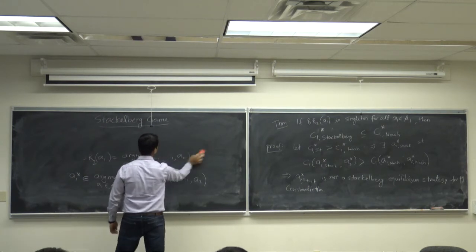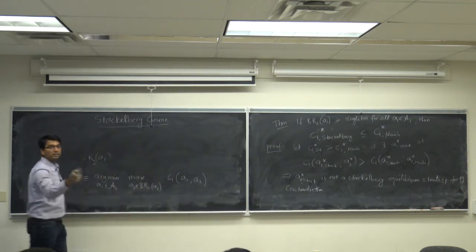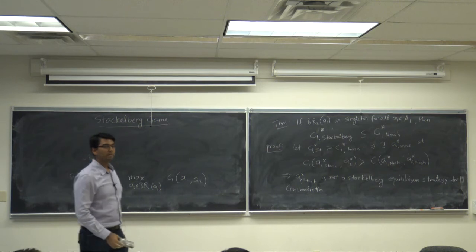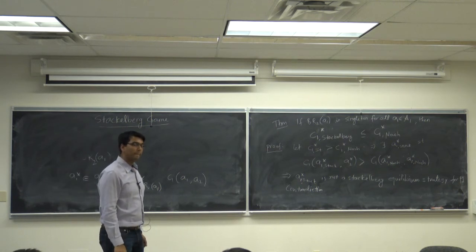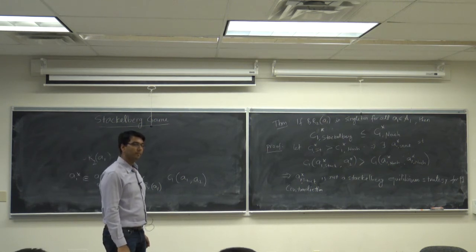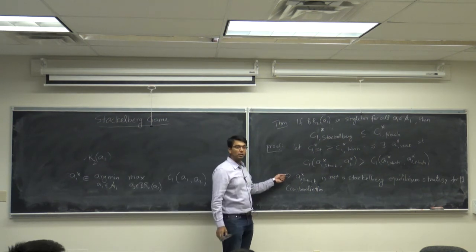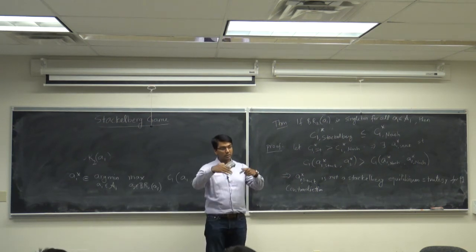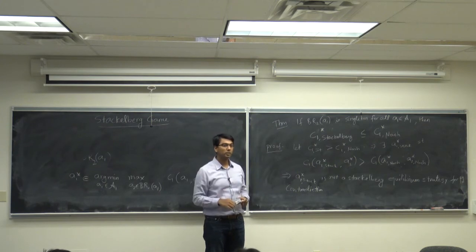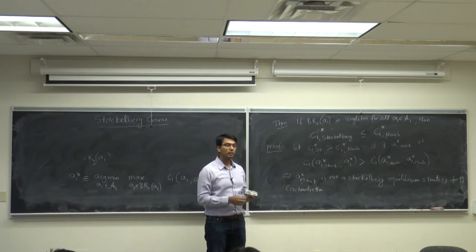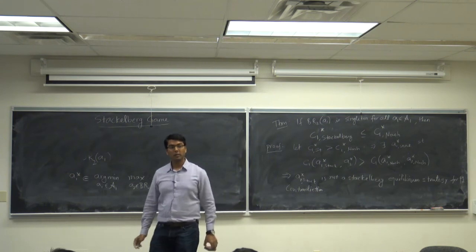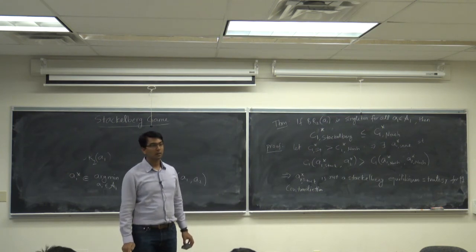A question: if the best response of player two is not unique, is it possible for Nash equilibrium to have a lower cost than Stackelberg? Yes — you can see that in the second example. So why would the leader player want to play according to Stackelberg? Because he does not have an option — the leader must declare its strategy.